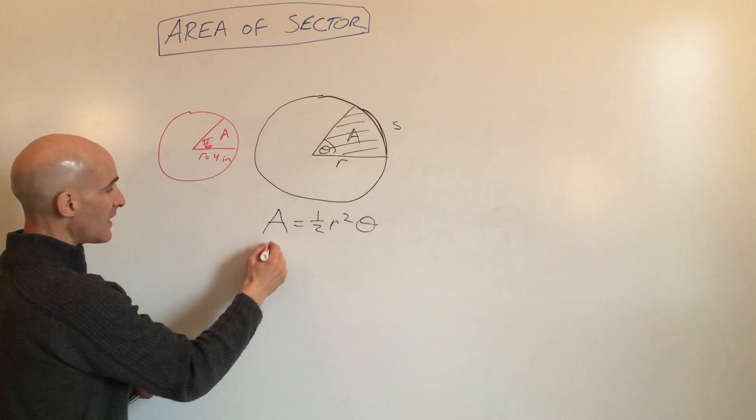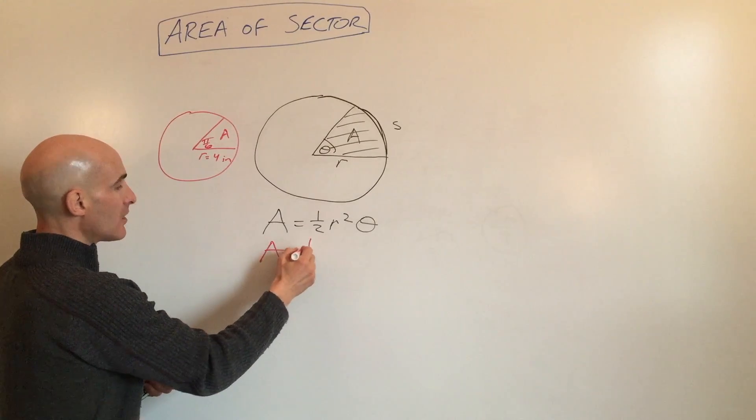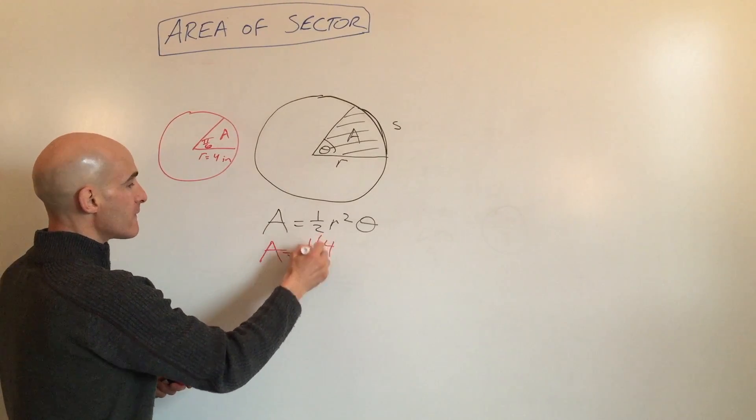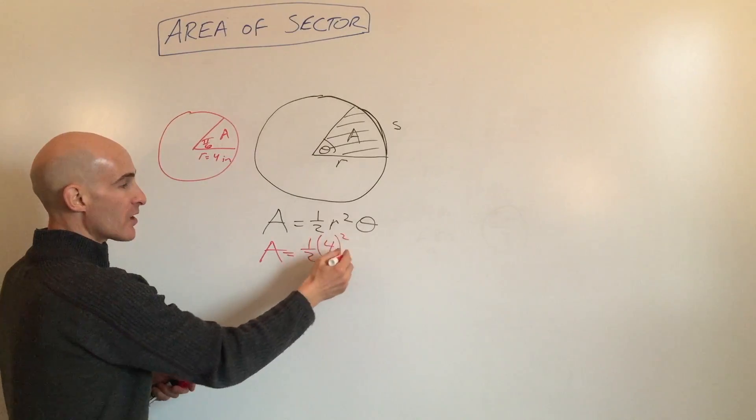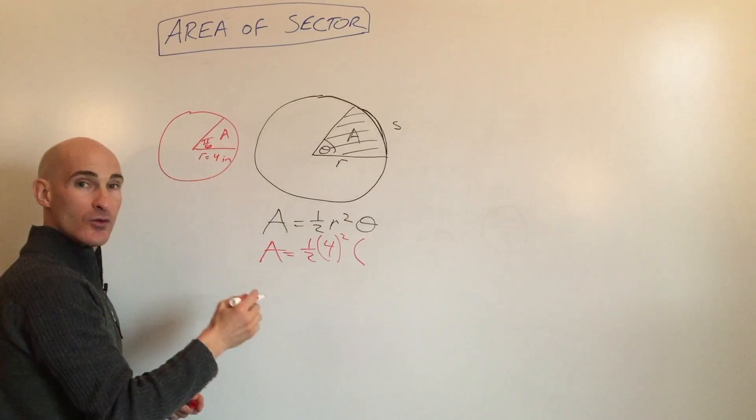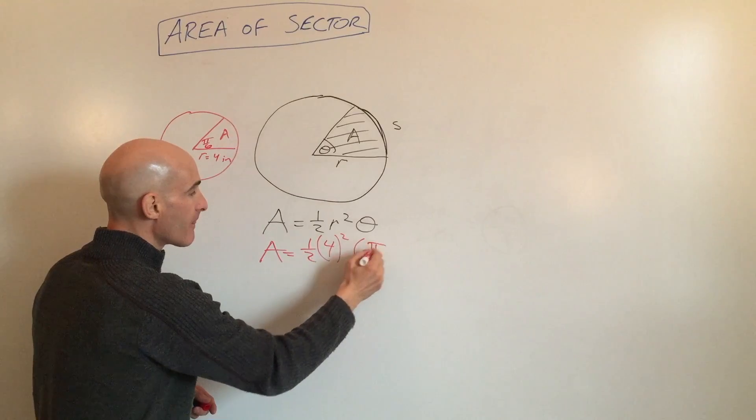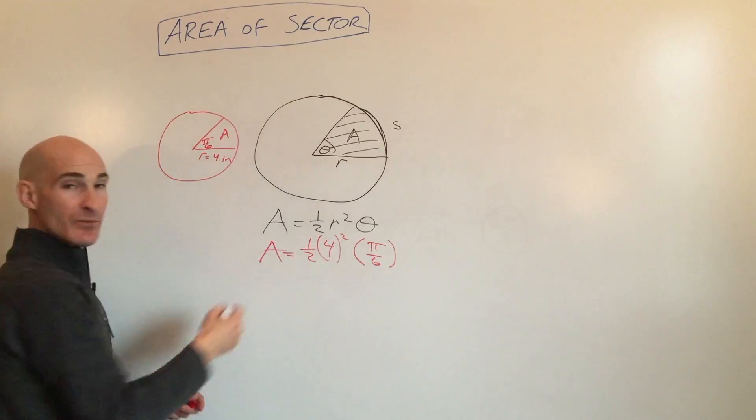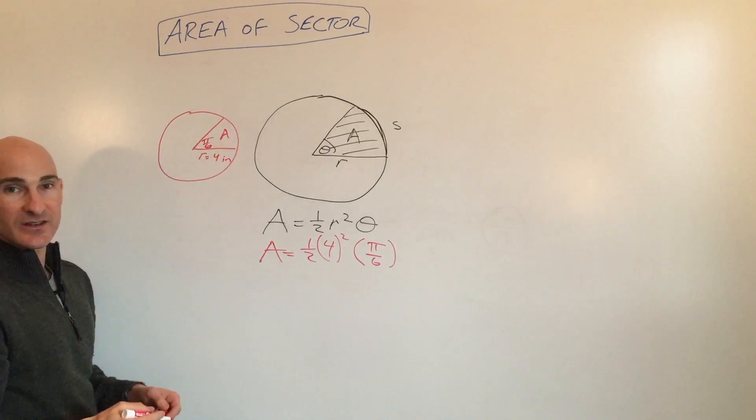Okay, so what we're going to do is area equals one-half four squared, that's the radius squared, times the central angle, which is pi over six. All we have to do is simplify now, and that's the area of the sector.